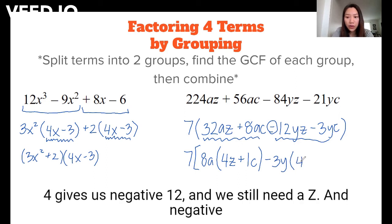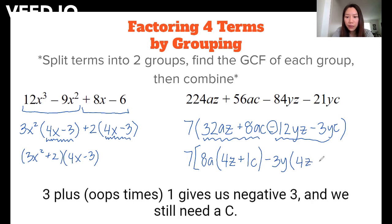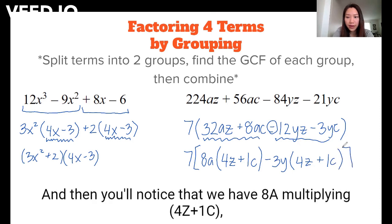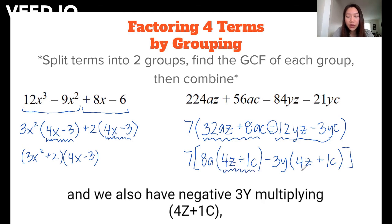So negative 3 times 4 gives us negative 12, and we still need a Z. And negative 3 times 1 gives us negative 3, and we still need a C. And then you'll notice that we have 8A multiplying 4Z + C, and we also have negative 3Y multiplying 4Z + C.